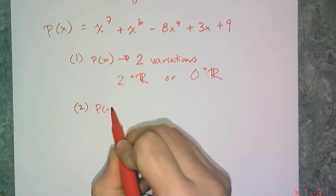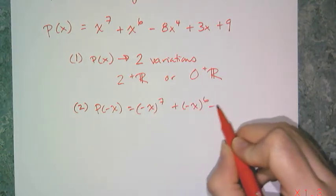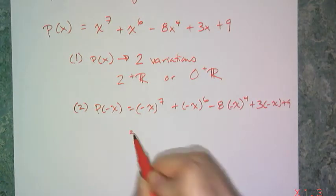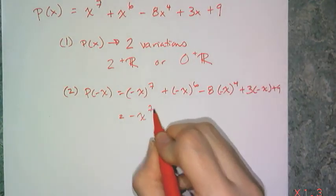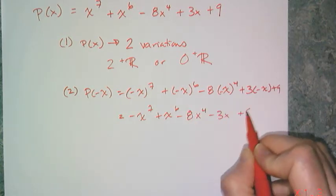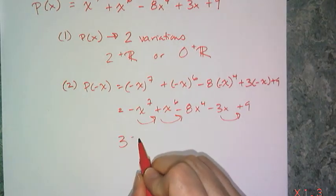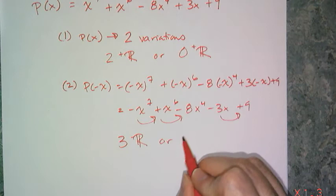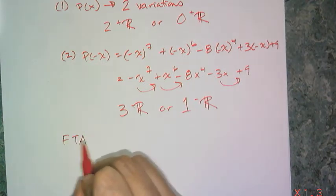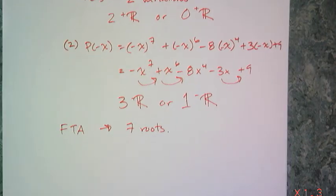If I look at the negative version of this polynomial, I replace x with negative x and simplify the signs, getting negative x to the 7th plus x to the 6th minus 8x to the 4th minus 3x plus 9. I look for variations in sign, of which I have 3. So that means I have 3 negative real roots or 1 negative real root, and by the fundamental theorem of algebra there have to be 7 roots in total.